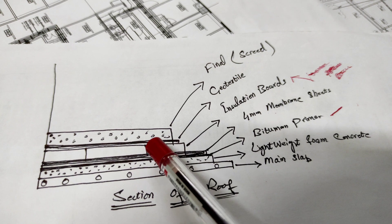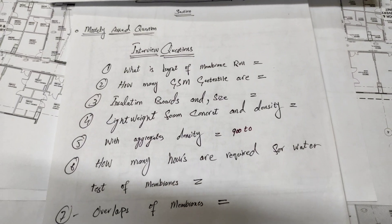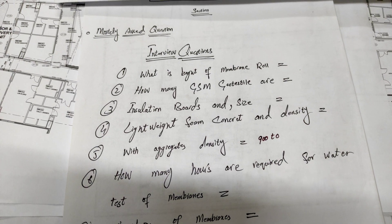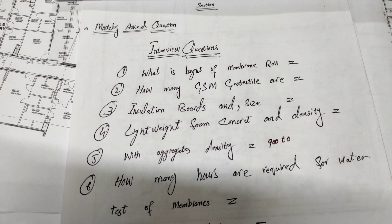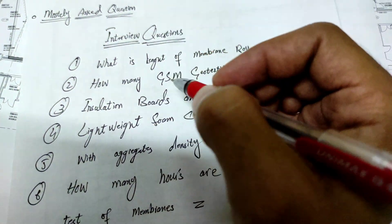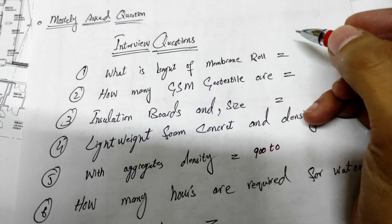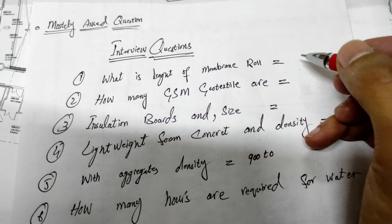These are the most commonly asked questions during interviews for waterproofing civil engineers. First: What is the length of membrane roll? Membrane roll length is 10 meters long and width is 1 meter.